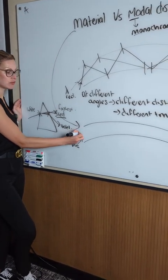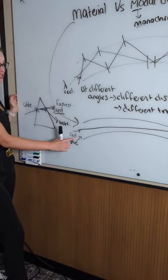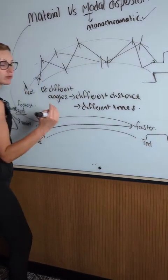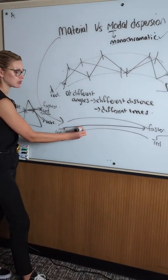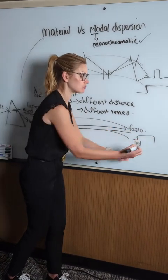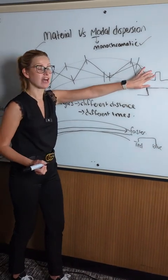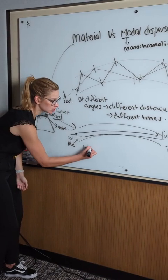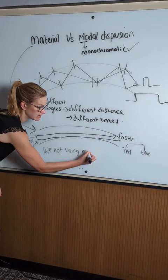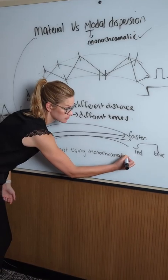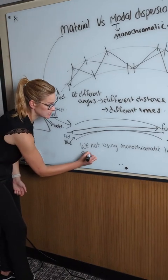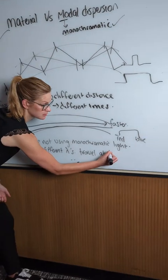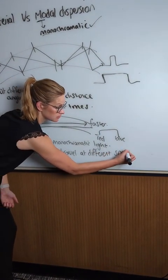So the problem here is if I put red light in, it's going to travel much faster through the optic fiber than the blue light. Because the red light is traveling faster, it's going to arrive much sooner — red is what I'm going to receive first. Whereas the blue light is going to travel much slower and take a much longer time to get through the optic fiber, so I'm going to receive the blue light later in time. So again, I don't have my narrow beam — I have a wider or broadened beam, which makes my signal weaker. So with material dispersion, the problem is that we are not using monochromatic light, so the different wavelengths travel at different speeds.